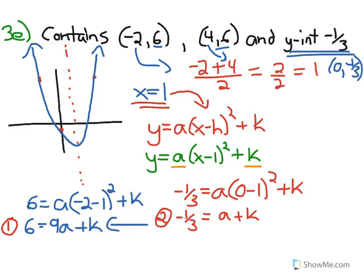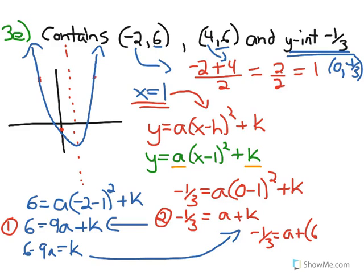We should be able to use our solid algebra skills to solve for this. I'm going to use substitution. I'm going to isolate k in this first equation. I'm going to do 6 minus 9a equals k. Then I'm going to sub that in for k here. I'll get -1/3 equals a plus 6 minus 9a. I've just subbed in 6 minus 9a for k. Then you get -1/3 equals a, sorry, it'll be -8a plus 6.